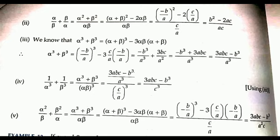In subtopic 2, we have to find α/β + β/α. Taking αβ as the LCM, the numerator becomes α² + β², which we can write as (α + β)² - 2αβ, and the denominator is αβ. Putting the values: (-b/a)² - 2c/a divided by c/a. After simplification, the numerator is b² - 2ac and the denominator is ac. Therefore α/β + β/α = (b² - 2ac) / ac.